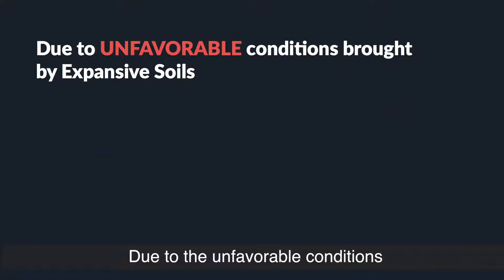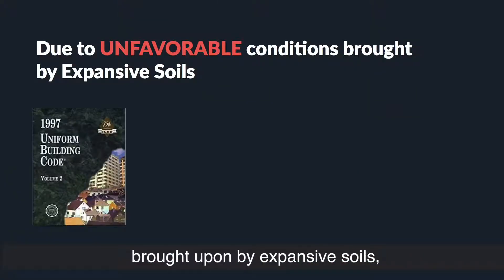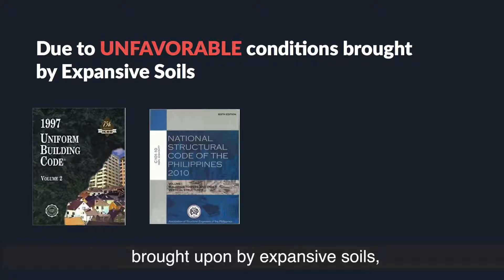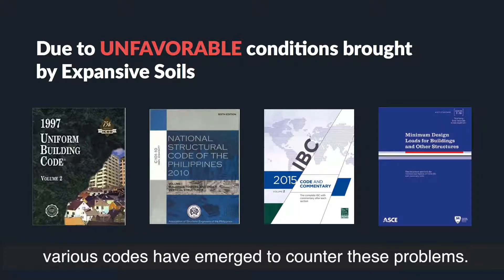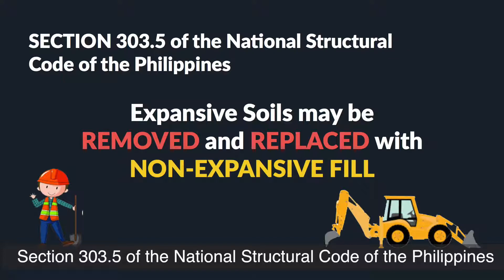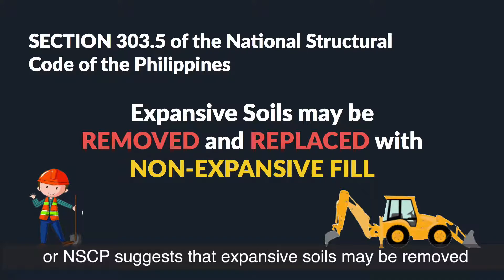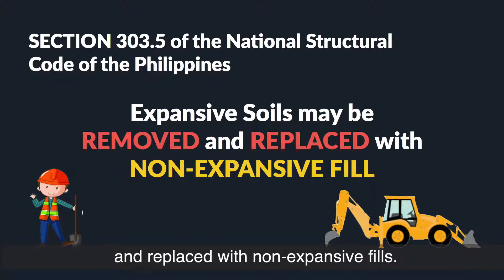Due to the unfavorable conditions brought upon by expansive soils, various codes have emerged to address these problems. Section 303.5 of the National Structural Code of the Philippines, or NSCP, suggests that expansive soil may be removed or replaced with non-expansive fill.